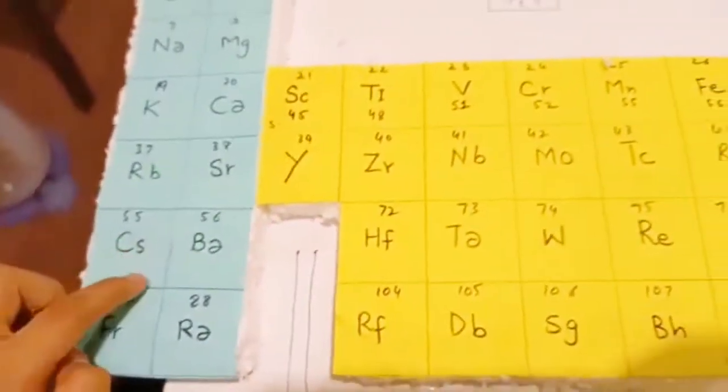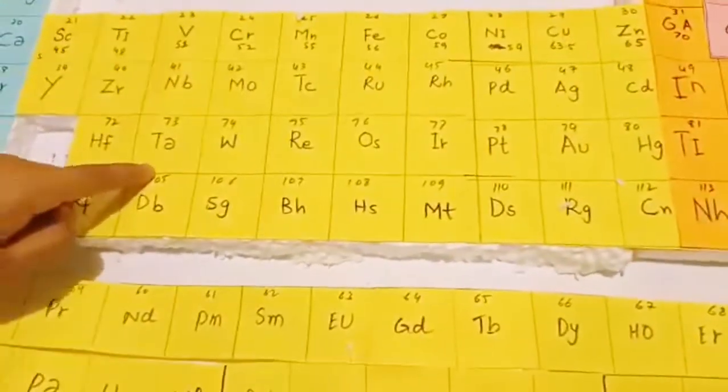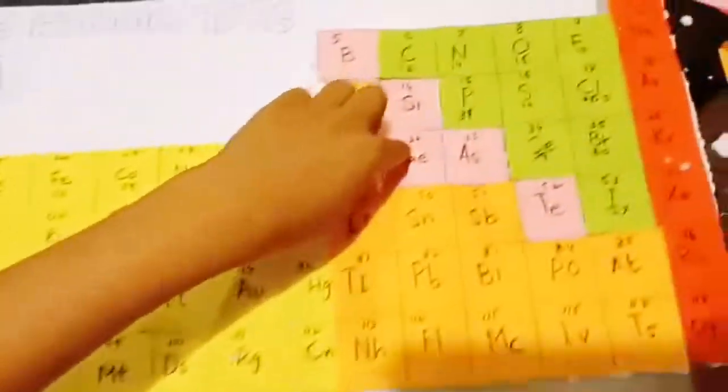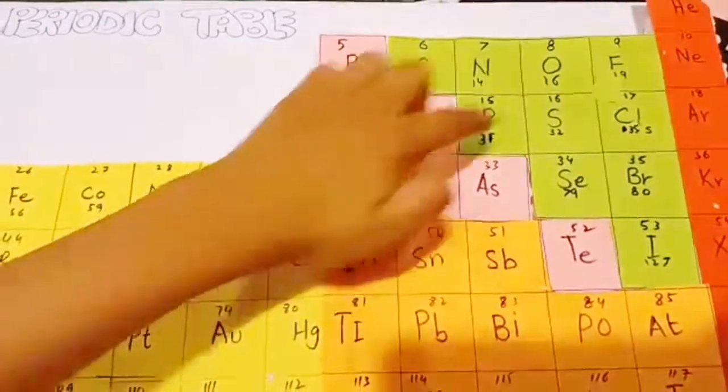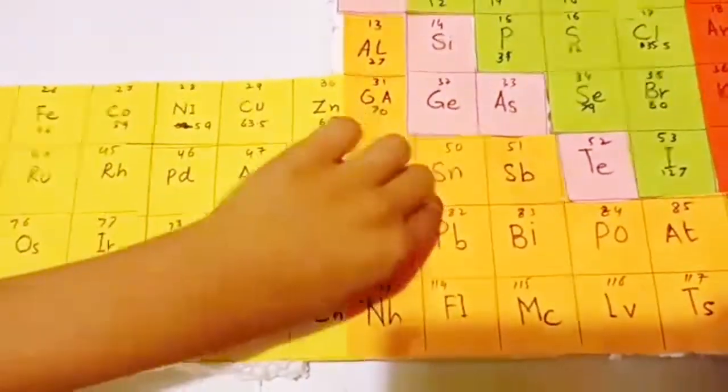Blue is reactive metals. Red is noble gases. Yellow is transition metals. Pink is metalloids. Green is non-metals. Orange is poor metals.